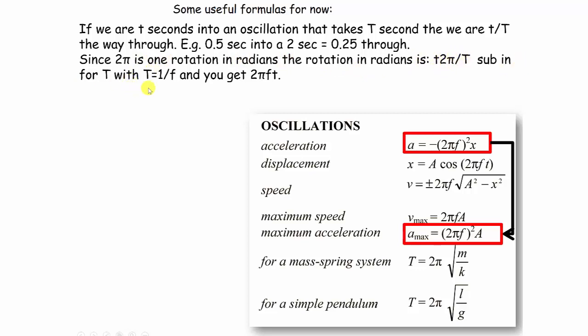2πft is basically telling the formula how far along in the cycle you are. So you can get your displacement by taking the maximum displacement multiplied by cos of 2πft.